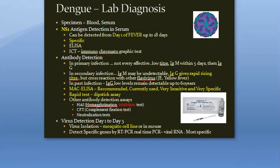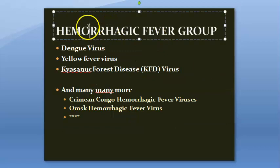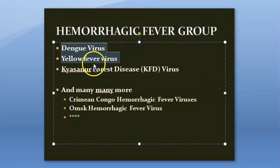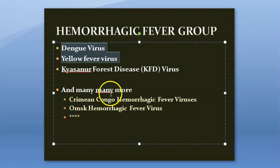An additional note on the hemorrhagic fever group: dengue virus causes hemorrhagic fever, as does yellow fever virus and Kyasanur Forest disease virus. However, yellow fever and dengue fever both belong to Flaviviridae under arboviruses, and are RNA viruses. Dengue is one of many causes of hemorrhagic fever.